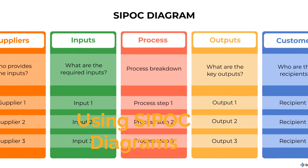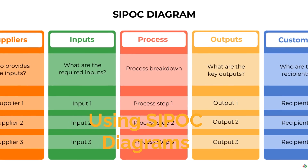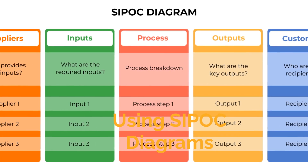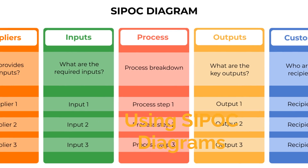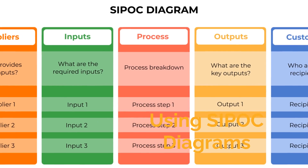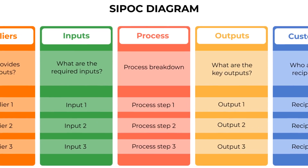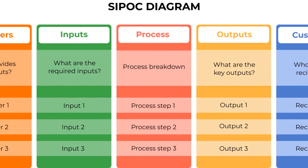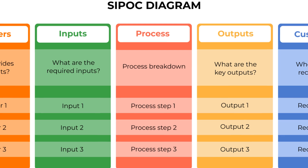A SIPOC diagram is often used in this phase to map out suppliers, inputs, process, outputs, and customers. This helps in understanding the process at a high level.